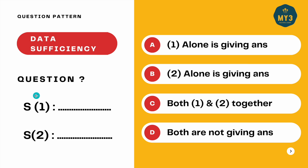You will be given a question followed by statement number one and statement number two. You need to look at the statements — if statement number one gives your answer, mark option A: statement one alone is sufficient. If only statement two gives the answer, mark option B. If both statements together give the answer, mark option C. If you cannot solve the question even by merging both statements, mark option D.